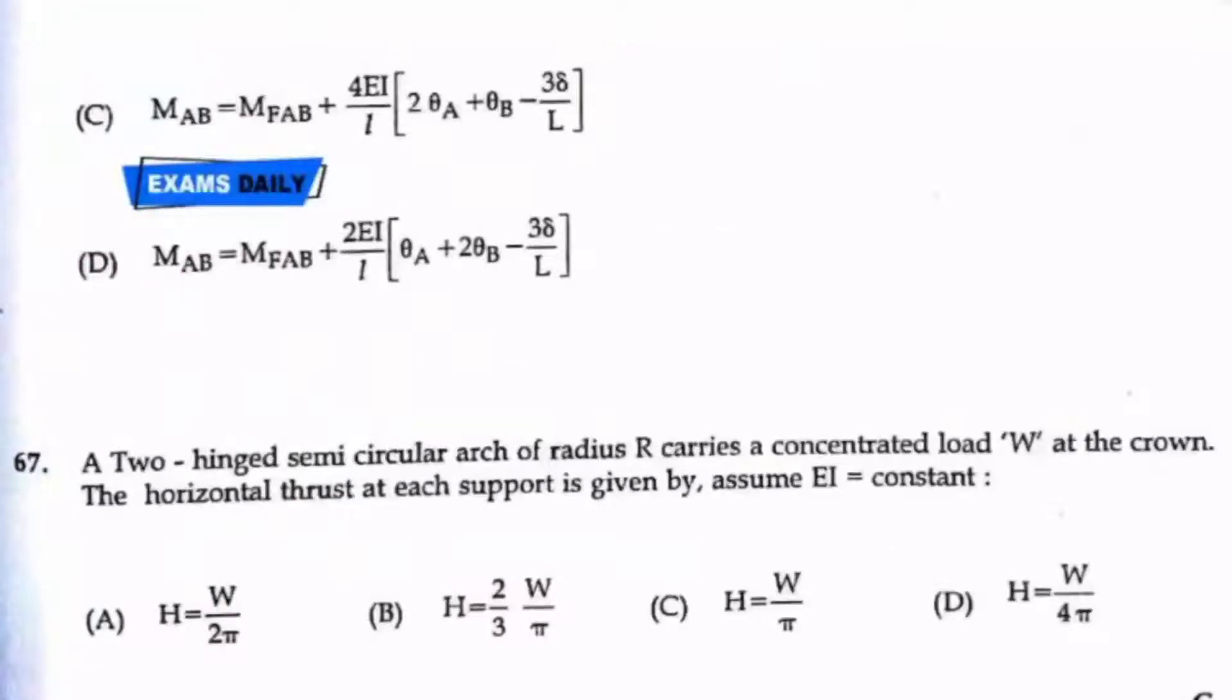Question 67: A two-hinged semicircular arch of radius R carries a concentrated load W at the crown. The horizontal thrust at each support is given by? Assume EI is constant. For this there is a direct formula, so option C is the right answer.